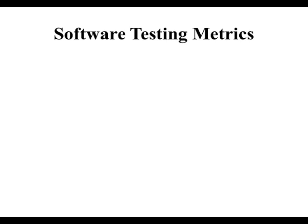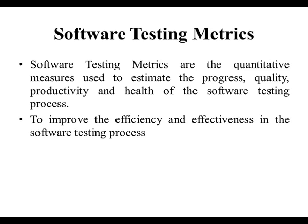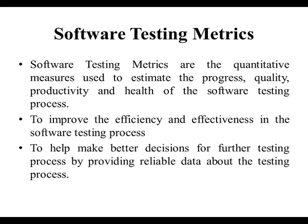Now, let us start with the definition of Software Testing Metrics. Software Testing Metrics are the quantitative measures used to estimate the progress, quality, productivity and health of the software testing process. It is also defined as a quantitative indication of extent, capacity, dimension, amount or size of some attribute of a process or product. The goal of Software Testing Metrics is to improve the efficiency and effectiveness in the software testing process and to help make better decisions for further testing by providing reliable data about the testing process.